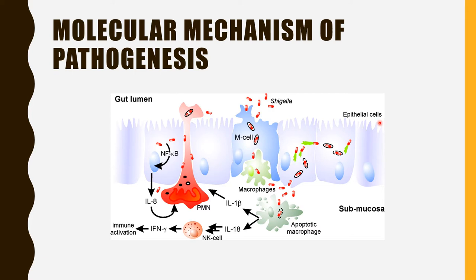This is the picture of epithelial cells and this is the Shigella bacillus. The Shigella bacillus gains entry into the epithelial cell through the transcytosis process via the M cell. It passes through the M cell and reaches the submucosal region on the other side of the epithelial cell, where there will be macrophages.